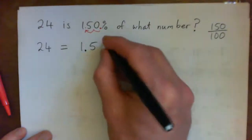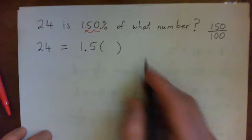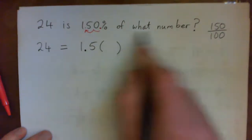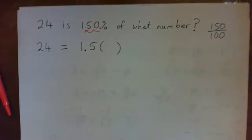Of means multiply in math. So of means multiply. Of what number, what number we can, what should we put in for that? You could use any type of letter. N, X, Y,